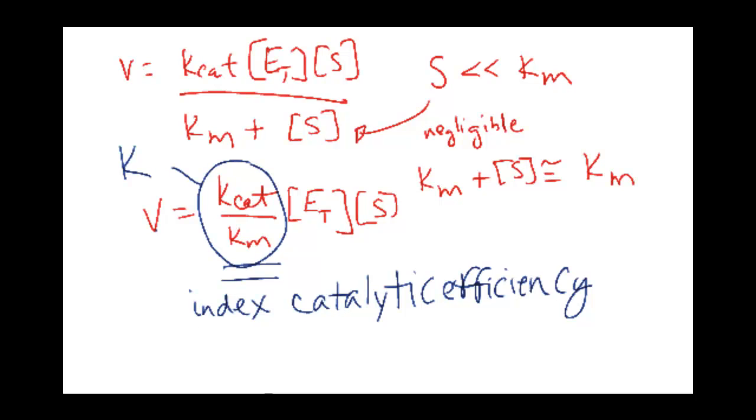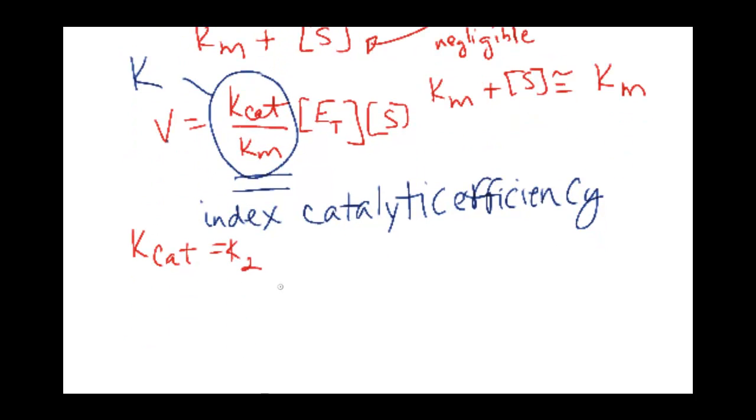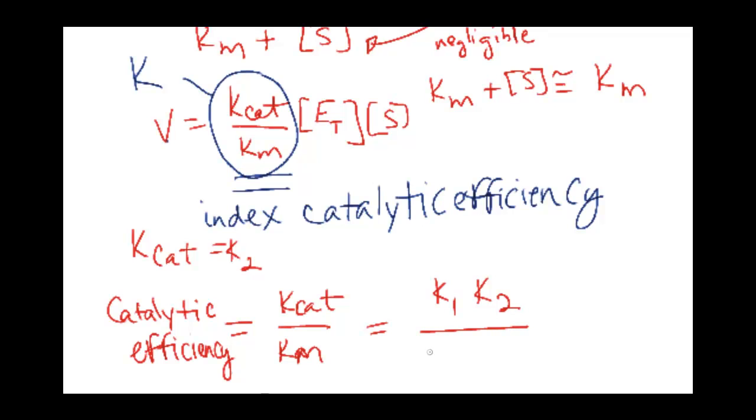So if we were to just look at the ratios when we restrict ourselves to k-cat being k2 only in this condition, we get this ratio of k-cat over Km. It's just your catalytic efficiency, and it will equal k1 times k2 over k-1 plus k2.